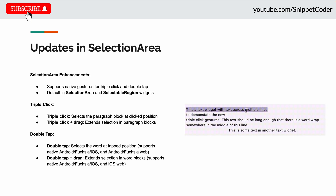The next update is in the selection area. They announced support for native gestures for triple click and double tap, as defaults in the selection area and selectable region widgets. With triple clicks, users can select paragraph blocks at the click position, and with triple click plus drag, they can also extend the selection across paragraph blocks.